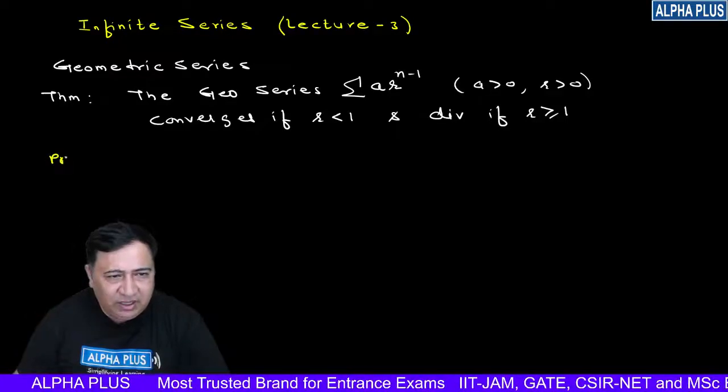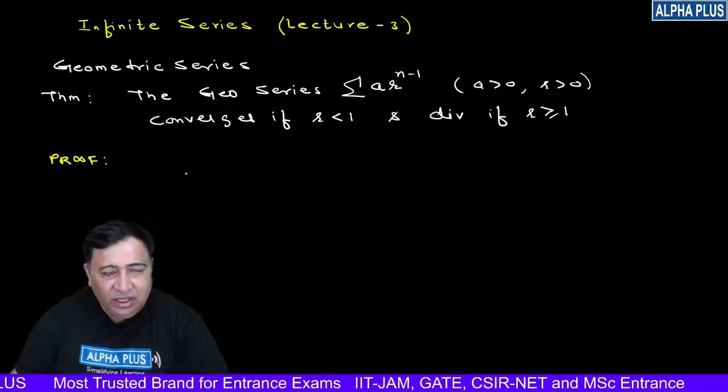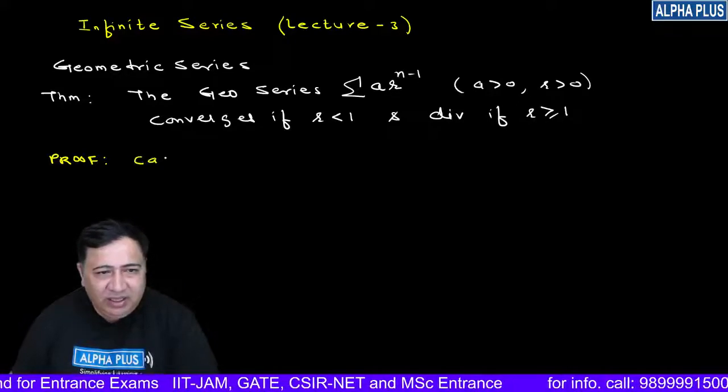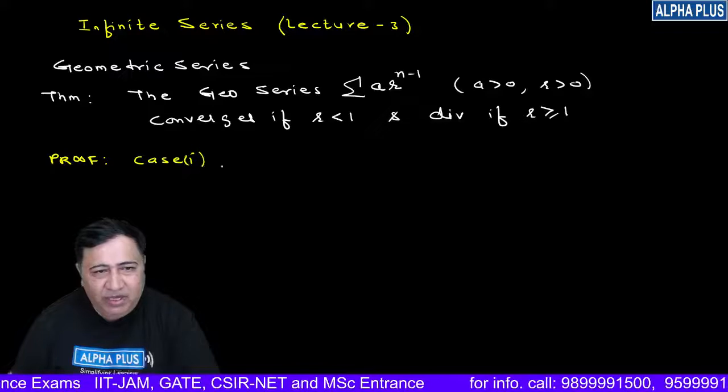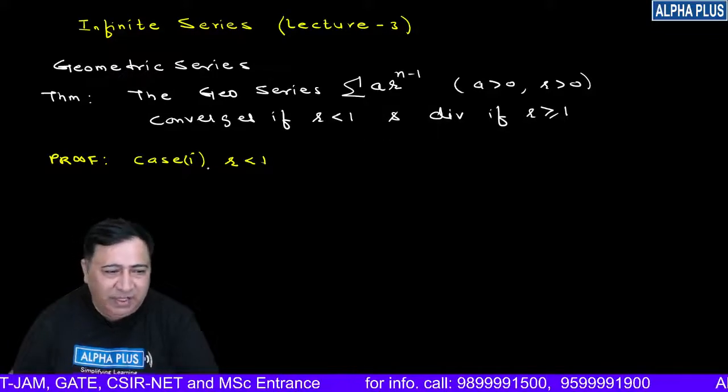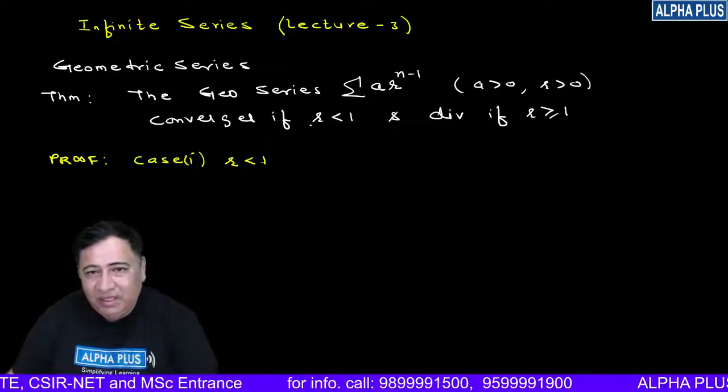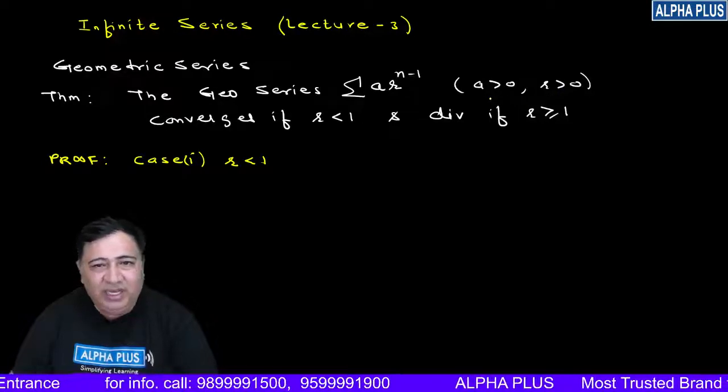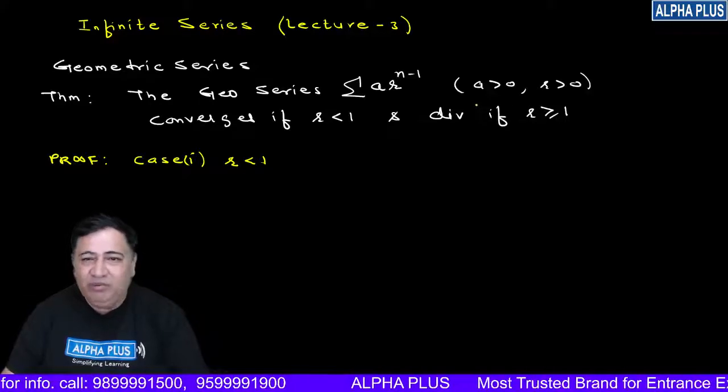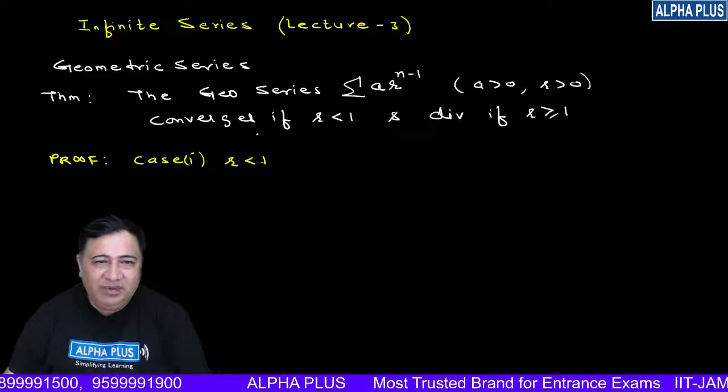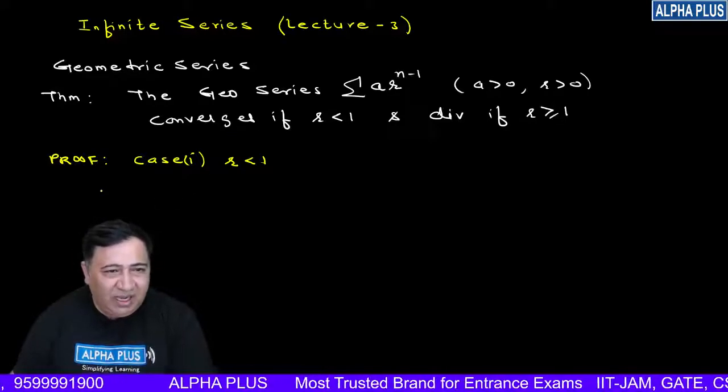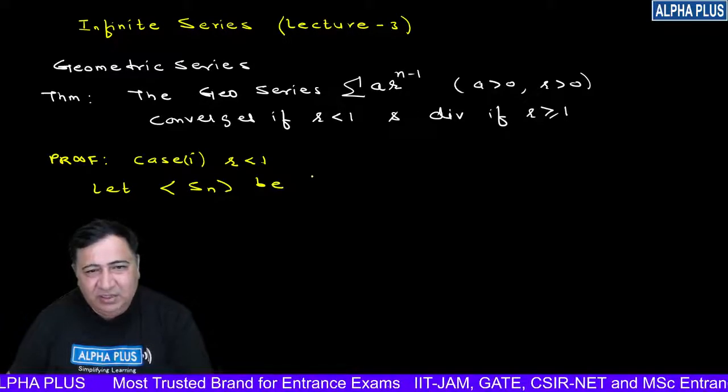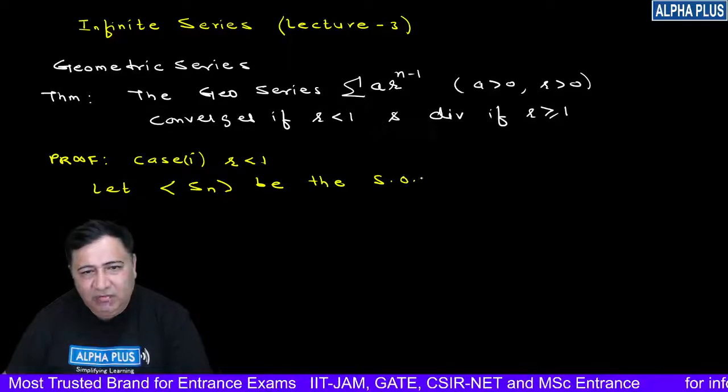Let's start with case 1. In case 1 students, the common ratio r is less than one. This is a series of positive terms or non-negative terms, so the sequence of partial sums is monotonically increasing. Let Sn be the sequence of partial sums of the geometric series a·r^(n-1).